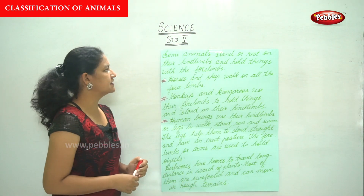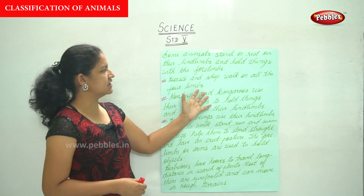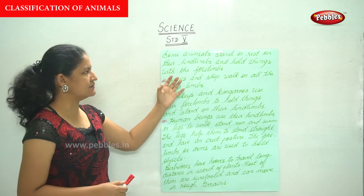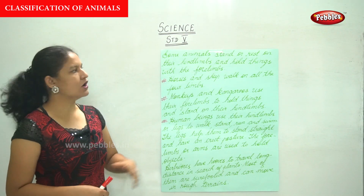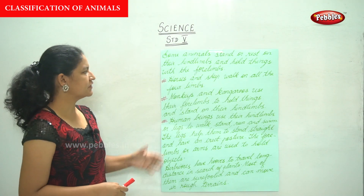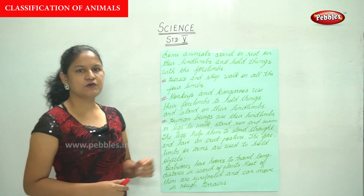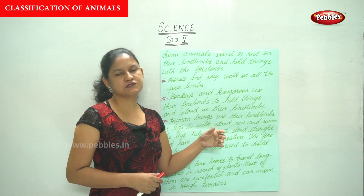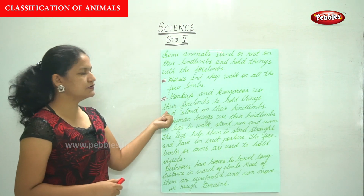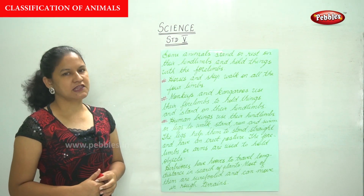Some animals stand or rest on their hind limbs and hold things with their forelimbs. Horses and sheep walk on all four limbs. Monkeys and kangaroos use their forelimbs to hold things and stand on their hind limbs.